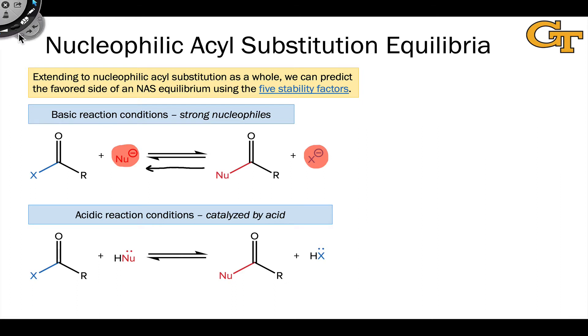Under acidic reaction conditions, we're often dealing with neutral reactants and products. So here, maybe it's not as obvious how we think about which side is favored. I would encourage you to think about the conjugate bases of the nucleophile and x, just as if this reaction were occurring under basic conditions. Because what it comes down to, ultimately, is which of the two potential nucleophiles, H-nu on the left-hand side and Hx on the right-hand side, is weaker. That side will be favored.